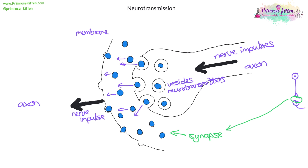The nerve impulse then moves down the axon of the next neuron. The neurotransmitters then get released and broken down by enzymes. The enzymes break down the neurotransmitters and all the little chemical parts get reused on this side to create more neurotransmitters in vesicles.